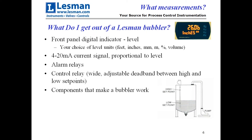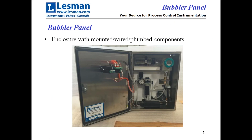Here's an example of a bubbler panel. You can see the digital indicator on the back side of the door. There's a pressure transmitter, a constant flow regulator with a rotometer, and a coalescing filter with its pressure gauge. The little black box on the bottom is a heater with a thermostat, and there are electrical wiring terminals up on the top. That's the spread of a control panel.